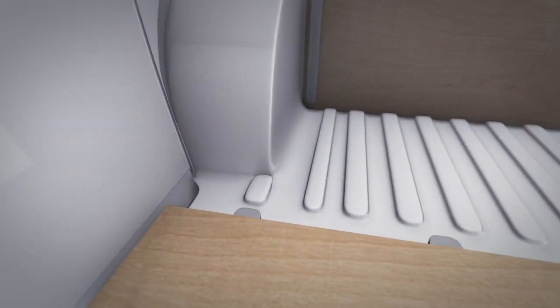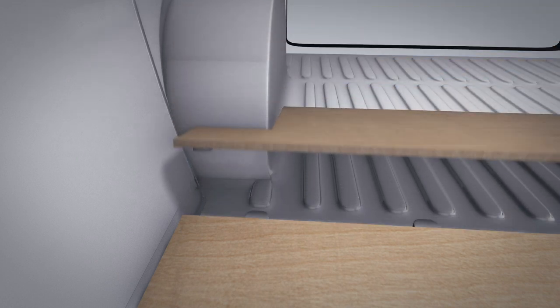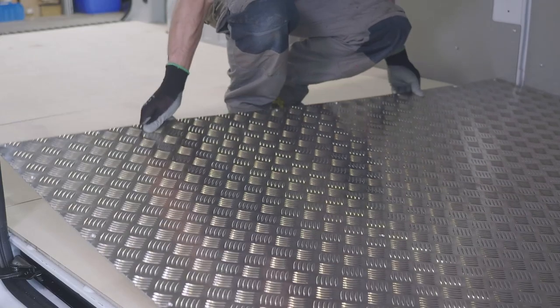The liner's top layer is made from aluminum tread plate with a base thickness of two millimeters and a raised pattern of 1.8 millimeters.